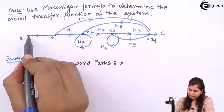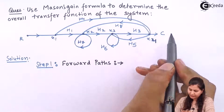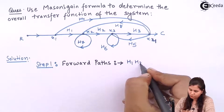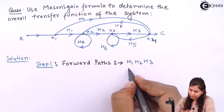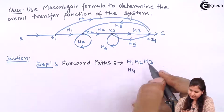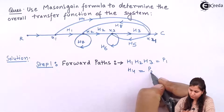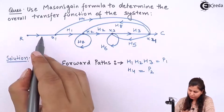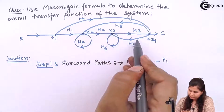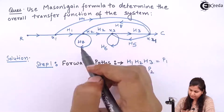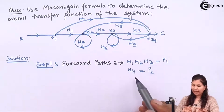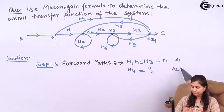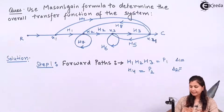Our first forward path P1 will be H1, H2, H3, terminating at the output node. Another forward path P2 will be H4. We check if there are any other forward paths — since arrows go in another direction for remaining branches — so we have exactly two forward paths: P1 = H1·H2·H3 and P2 = H4.